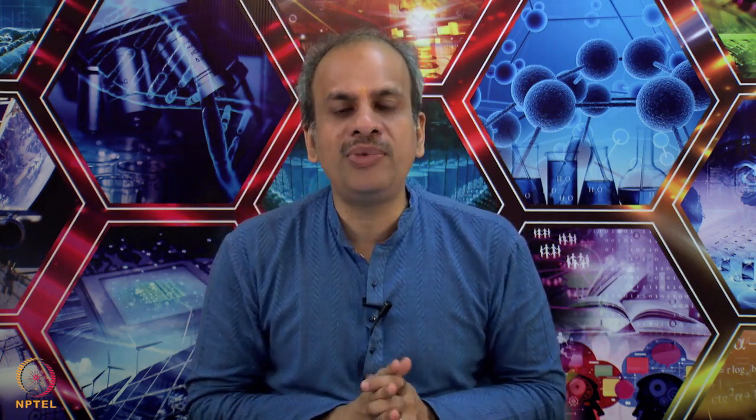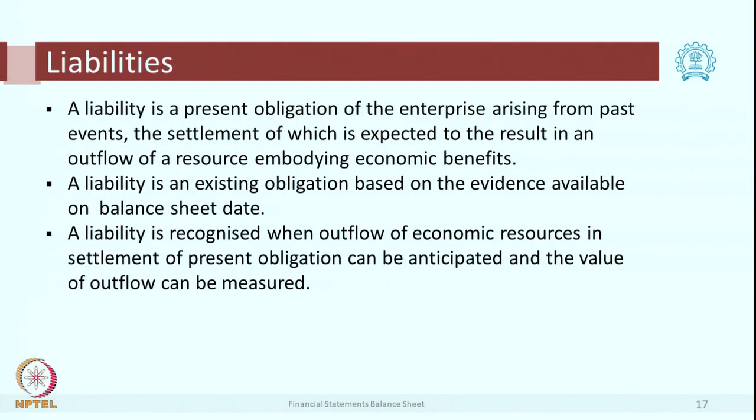In the example: I have purchased raw material, I have not yet paid, I am going to pay within a month — what type of liability is it? It will be a current liability, because it is going to be settled in just one month. Now, it is an existing obligation, there should be some evidence available on the balance sheet date, and it is expected that there will be some outflow which can be anticipated and whose value can be measured. Suppose we have purchased raw material of 1 lakh — we will pay after 1 month, rupees 1 lakh. So you know the expected outflow is 1 lakh, that is why it is called a liability.